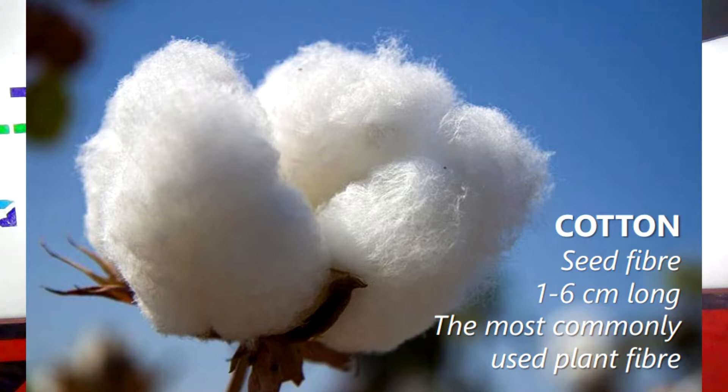The second plant fiber is cotton. The cotton fiber is extracted from the seed. The cotton seed is this big ball of cotton fiber. The cotton fiber is about one to six centimeters long, so it is not long at all, and as mentioned before, it is a staple fiber because it has such short fiber strands.